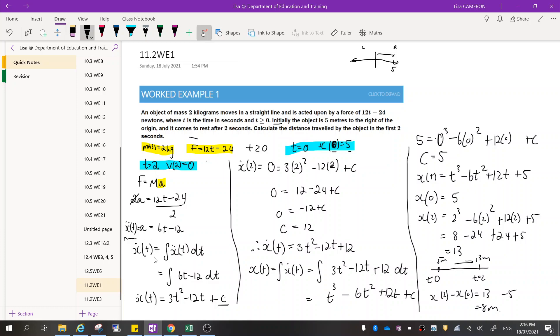If I want to find velocity, then I need to integrate it. So I'm integrating it, which gives me this down here. Now I've got some constant on the end here. And so far in methods, we've left it at that point. But in specialist maths, we're given a bit of extra information, which means we can solve for the constant value.